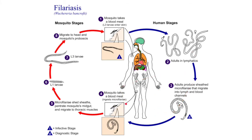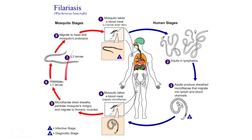Filarial worms require a mosquito stage because it is inside the mosquito's body that they are able to develop from microfilariae into L3 larvae.